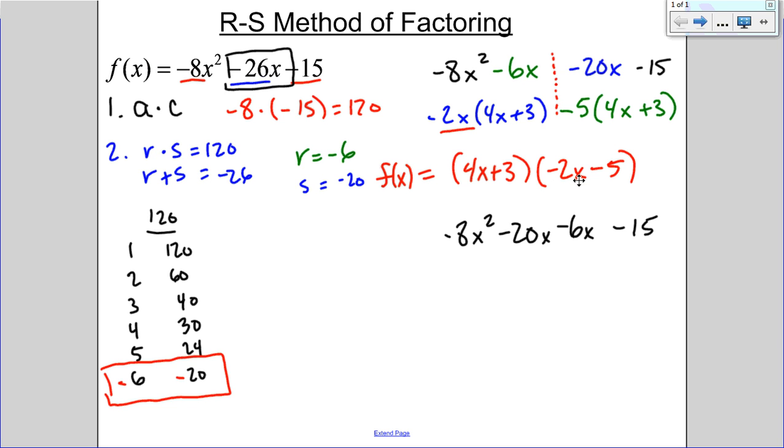And that's where this factored form is really useful. That if I set each of these zero using the zero product property, 4x plus 3 equals zero and negative 2x minus 5 equals zero, it really finds those x intercepts quickly.